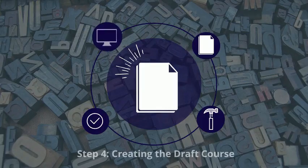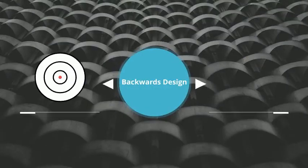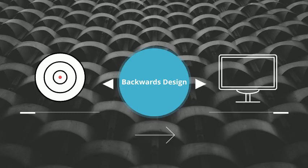The fourth step is creating the draft course with the curriculum development team. Using backwards design principles, the design team will work together to insert all associated content into the learning management system in a developed and functional format. Once this build-out is complete and all associated content has been created and reviewed, it is ready to go live.